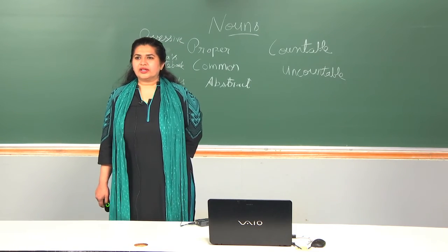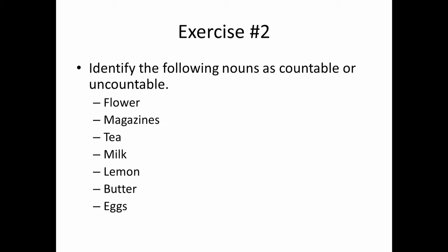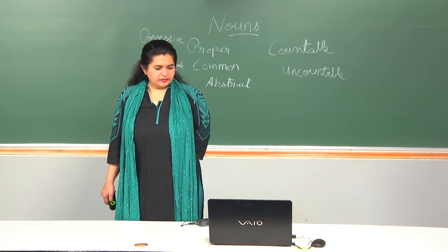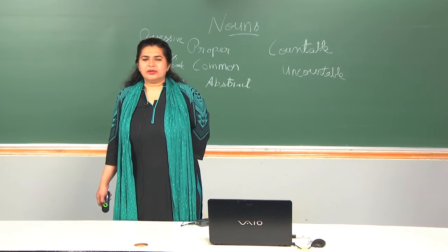Here is an exercise: identify the following nouns as countable or uncountable. Flower — can be counted, so flowers — countable. Magazine — countable; we can count 1, 2, 3, 4. Tea — uncountable. Milk — uncountable; we cannot count milk. Lemon — countable; we can say lemons. Eggs — countable. Butter — uncountable. You can give a quantity of tea, milk, and butter, but you cannot make plurals of them.